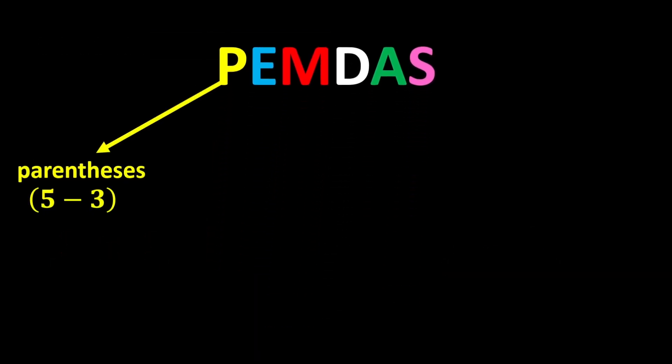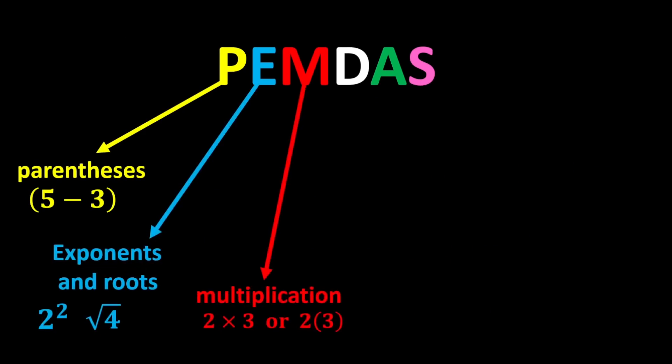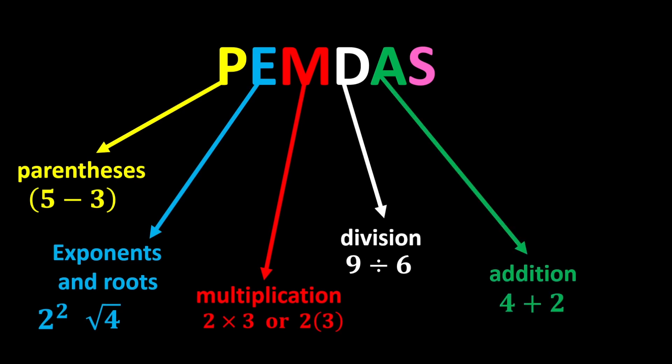P stands for parentheses, E stands for exponents and roots, M stands for multiplication, D stands for division, A stands for addition, and S stands for subtraction. According to PEMDAS, we first calculate the parentheses, then we calculate the exponents, after the exponents we perform the multiplications and divisions, and finally we do the additions and subtractions.